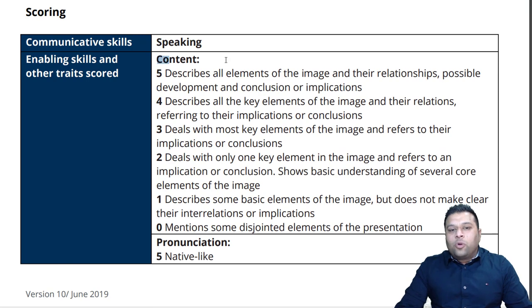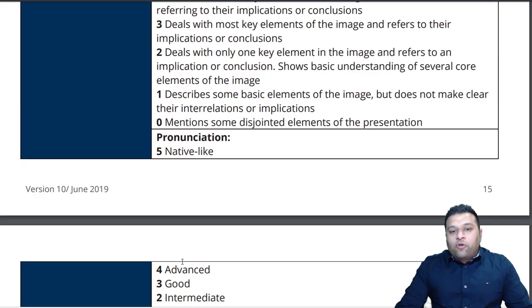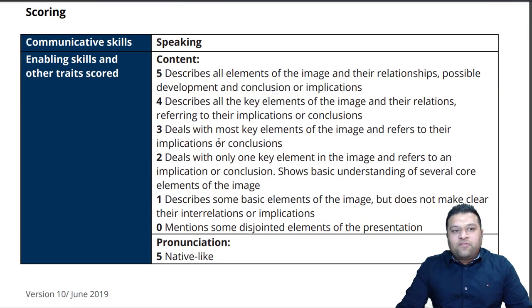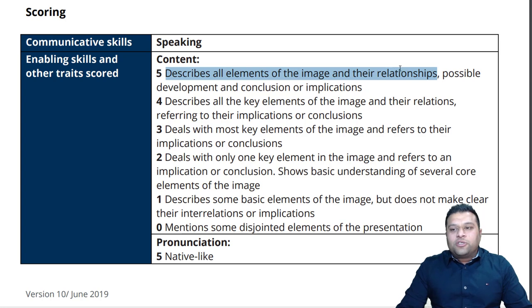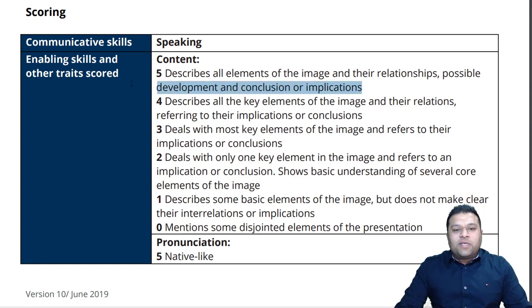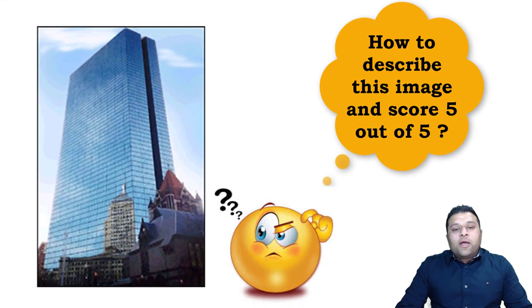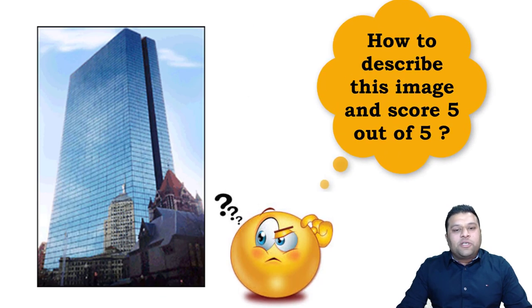Your marking is based on content, pronunciation, and fluency. This is the new score guide recently released. According to the score guide, in order to score five in content — which is the main thing — you need to describe all elements of the image and their relationship, possible development, and conclusion or implications. My focus is no less than five out of five in content, so I'm going to show you how to achieve that.